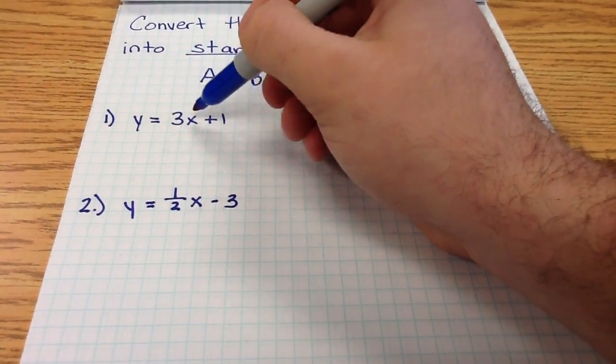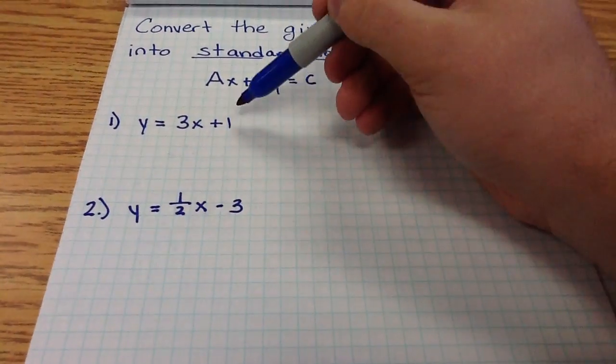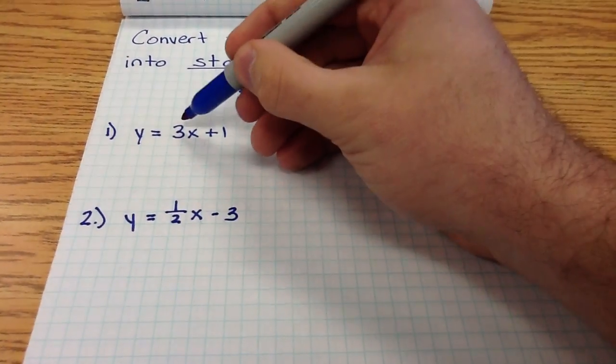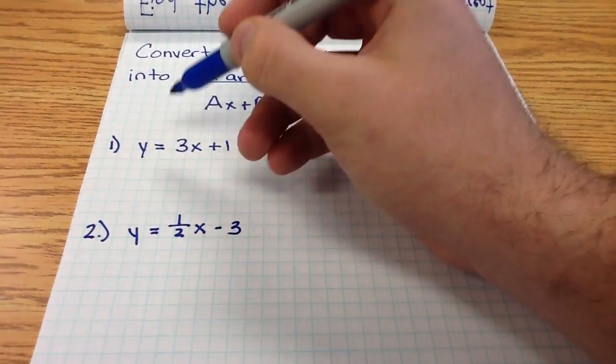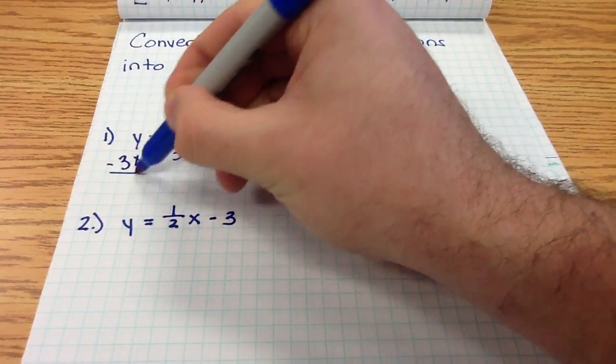To get x and y on the same side, I simply need to bring the x term to this side of the equation, because that constant term is already on the right, and that's where I want him. So to bring this positive 3x to the left-hand side, I simply need to subtract 3x from both sides of the equation.